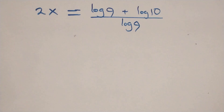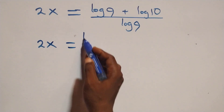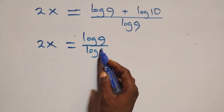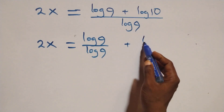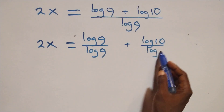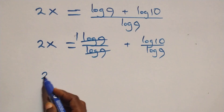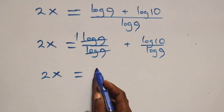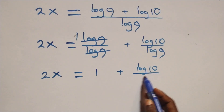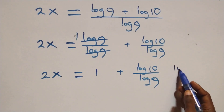The next step: we separate this into two fractions. We have 2x equals log 9 over log 9 plus log 10 over log 9. The log 9 cancels each other, leaving 1, which implies 2x equals 1 plus log 10 over log 9.